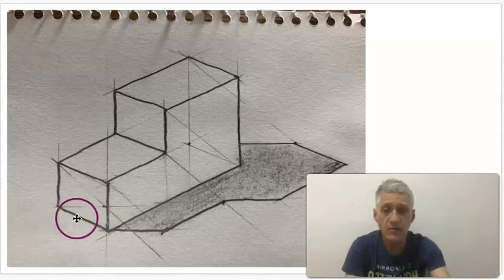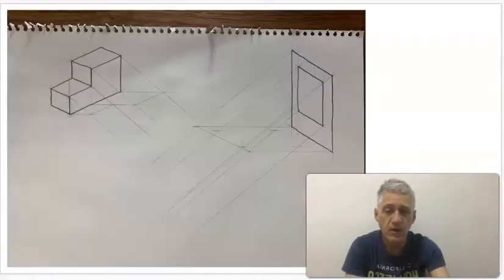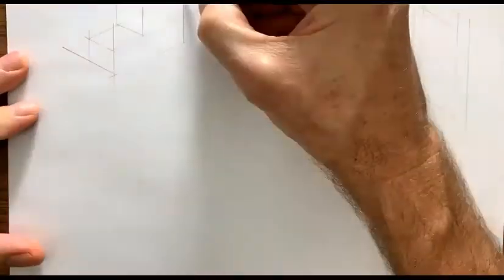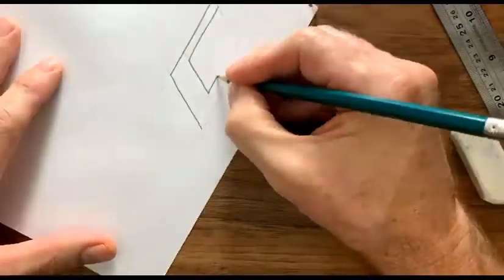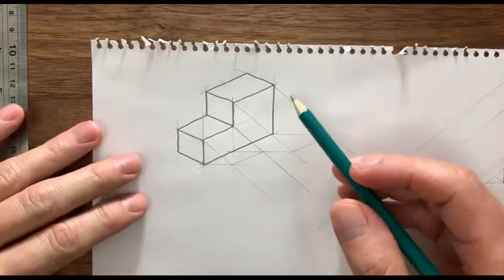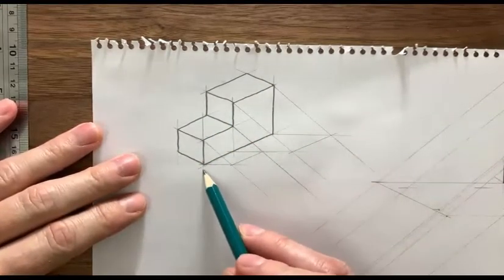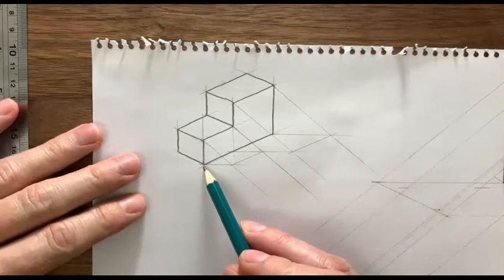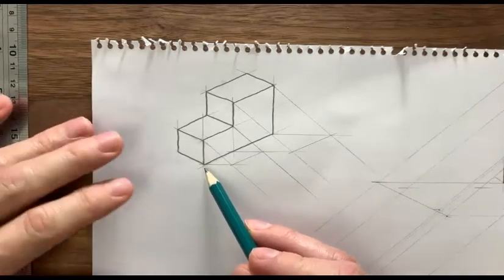We're going to start off with some simple shadows from the Sun's rays. We're going to draw the examples I have on the screen. We need to start with a simple drawing that has no shadow in it. I've drawn an isometric drawing here to start with, and it has some thickness.